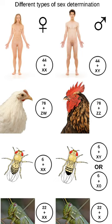The platyfish has W, X, and Y chromosomes. This allows WW, WX, or XX females and YY or XY males.